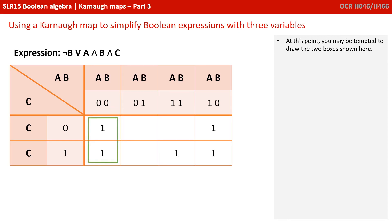At this point, you may be tempted to draw two boxes shown here. However, there's one additional rule we have opted not to let you know about yet. And that was on purpose. Boxes can wrap around a Karnaugh map.